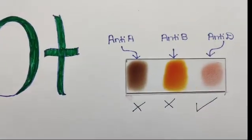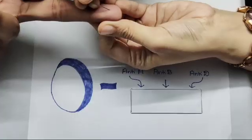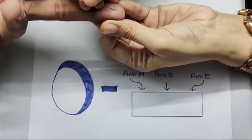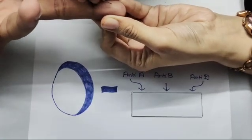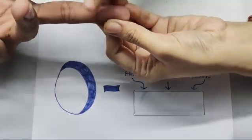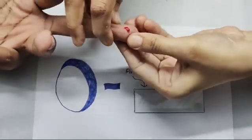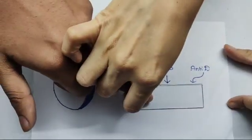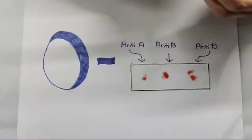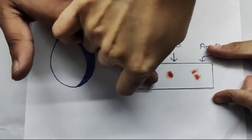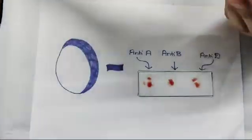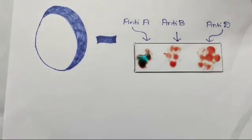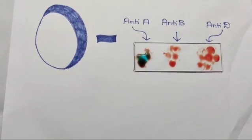Do the same for O negative blood group. Here also, no clotting will be seen in anti-A and anti-B, which means both antigen A and antigen B are absent. It is O blood group.